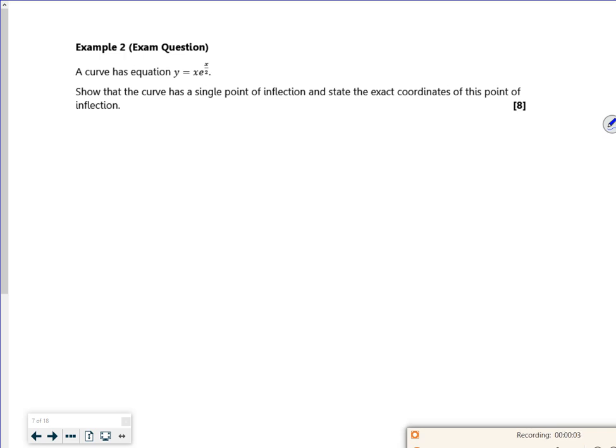Right then, so let's have a look at this one. So it says, a curve has an equation y equals x e to the x over 2. Show that it has a single point of inflection and state the exact coordinates at this point.